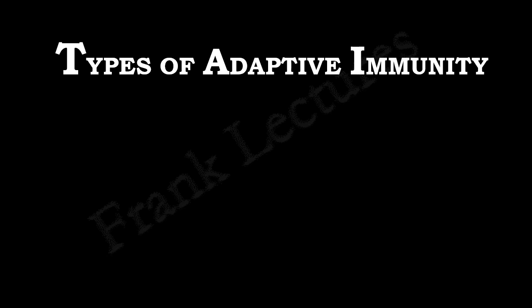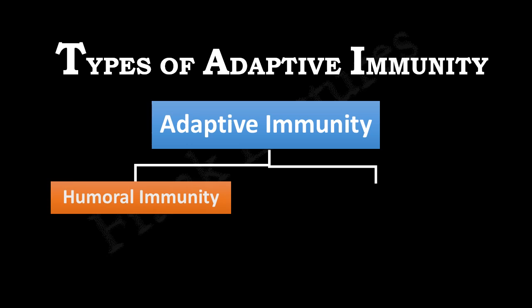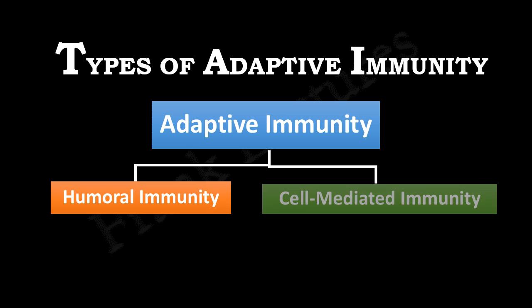There are two branches or types of adaptive immunity. These are humoral immunity and cell-mediated immunity.